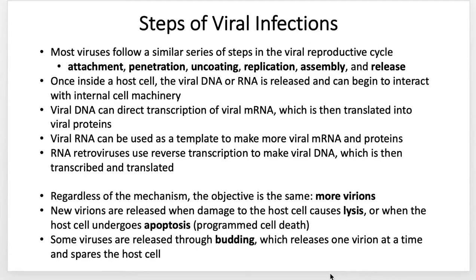We're going to talk about these steps as one overall broad overview. What really happens throughout these steps is that you have to get the virus to attach to a receptive cell, using those cell membrane receptors. Then you have to get the cell to essentially take the virus inside of itself. Once the virus is inside the host cell, the viral core containing the DNA or RNA is released, and that nucleic acid — that genetic material — can begin to interact with the host cell's machinery and become hijacked.